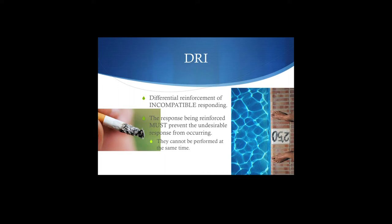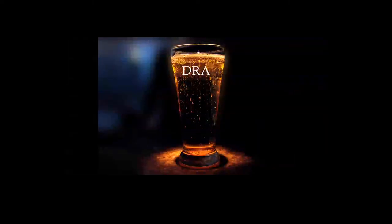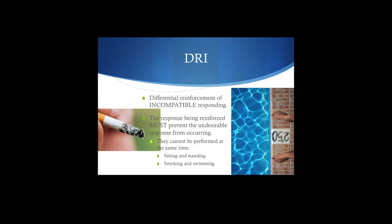In the classroom, my teacher used to do this with me all the time — either I had to sit on my hands because my hands were always messing with my neighbors, flicking pens and doing weird stuff. Sitting on your hands is incompatible with punching your neighbor. Another thing she would have me do was the 'four on the floor' — all four feet of the chair on the floor. There's no way to be leaning back in the chair, so it's incompatible. Sitting and standing, smoking and swimming — all sorts of good examples.